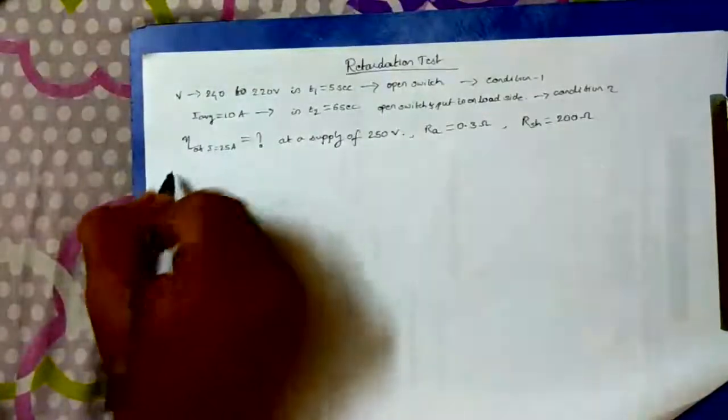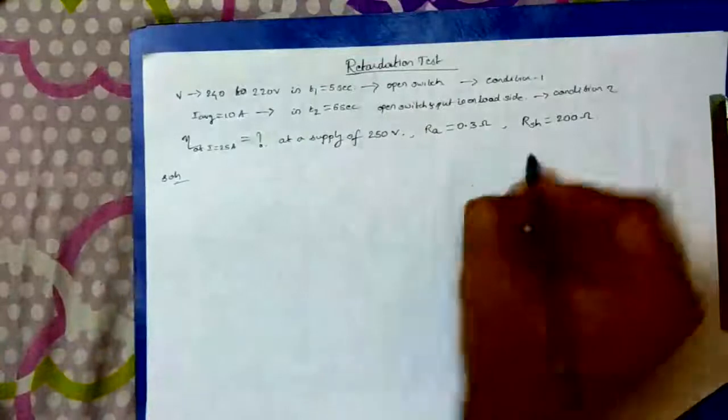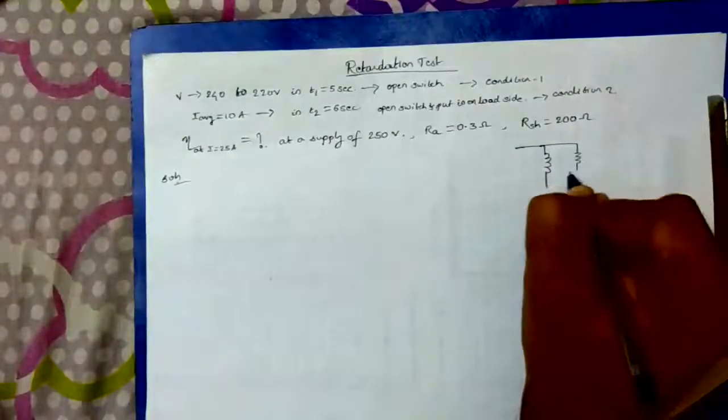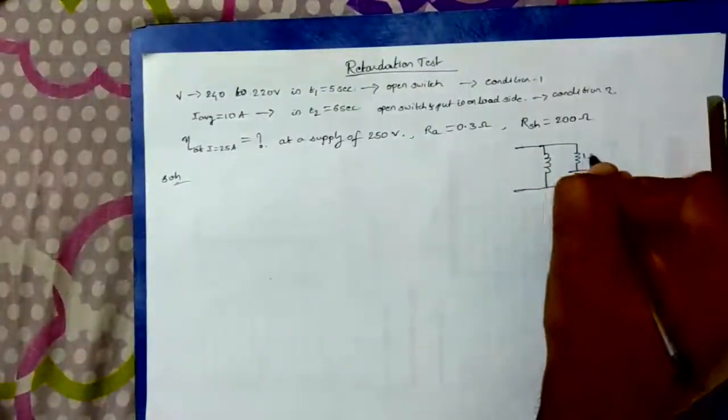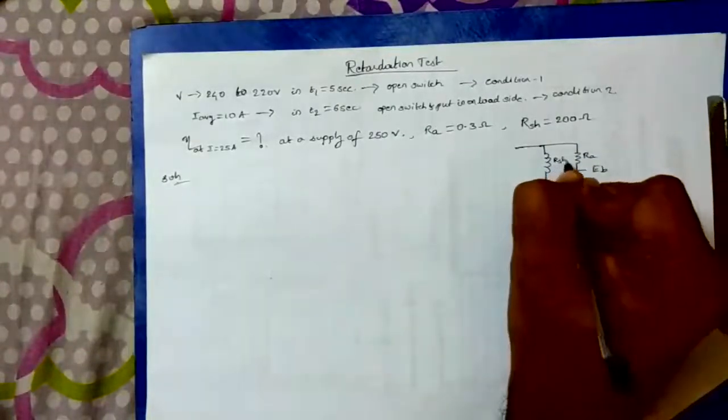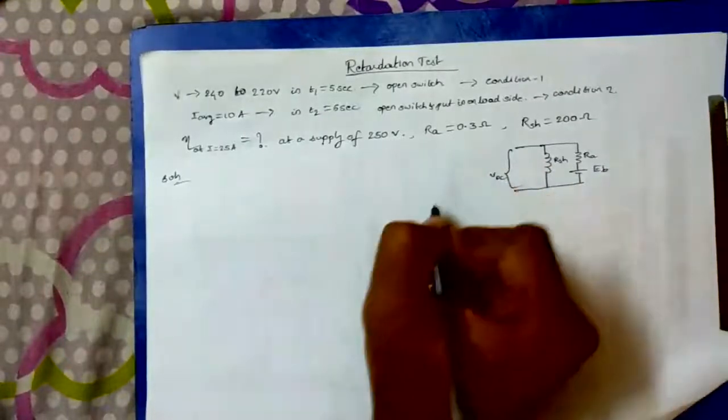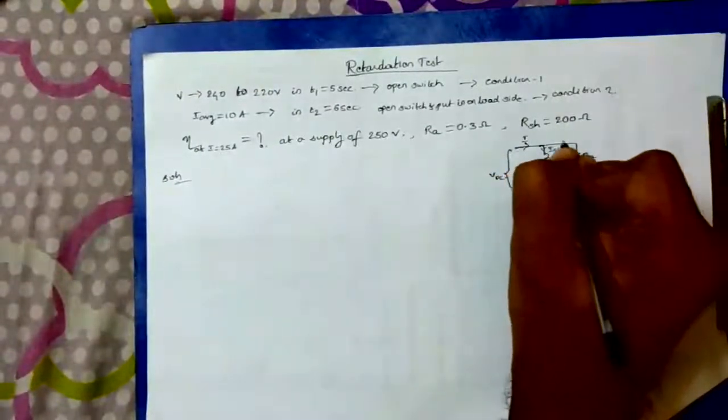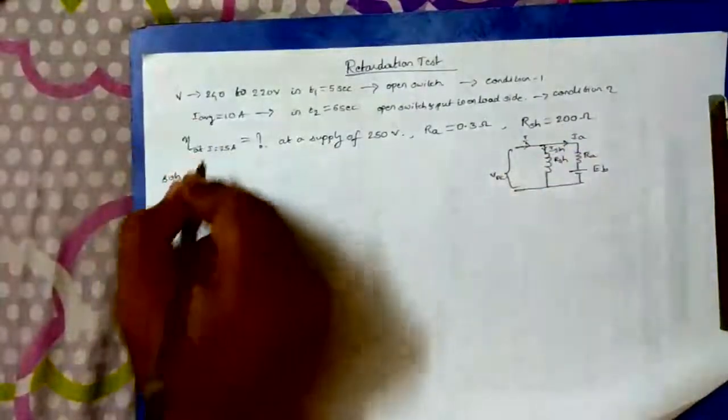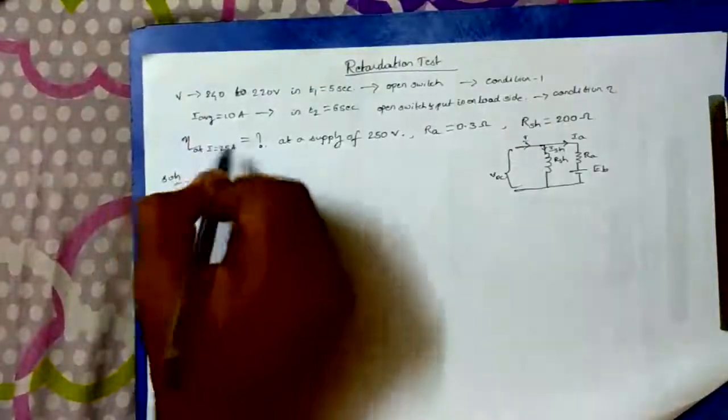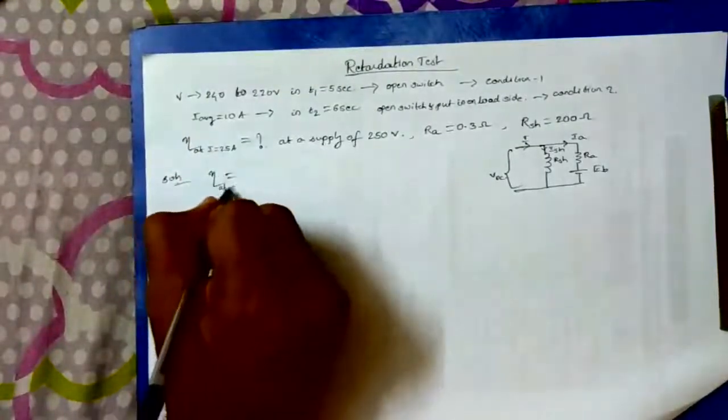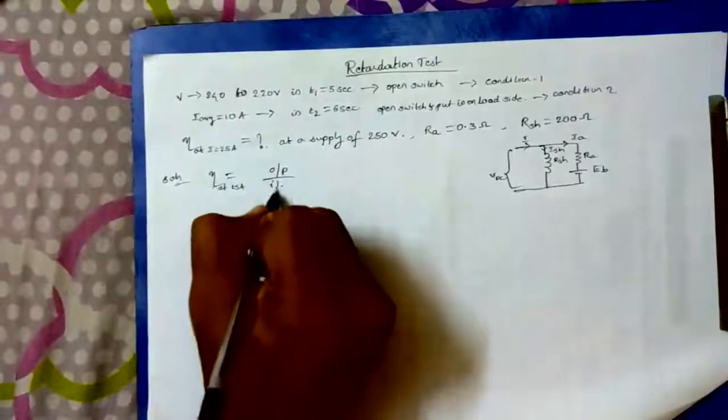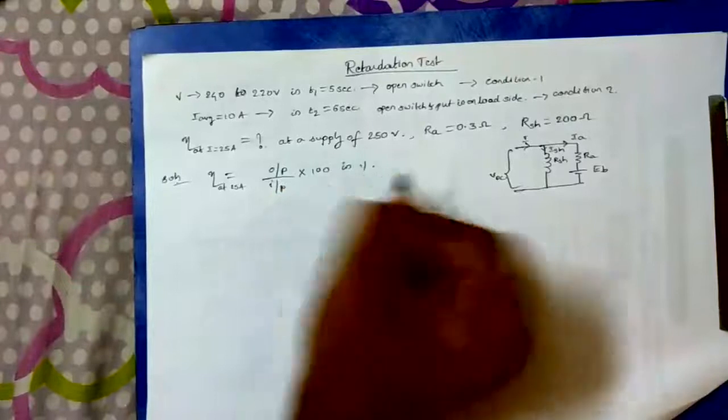Let us start with the problem. We are supposed to calculate efficiency. I shall write efficiency formula at 25 amps. Efficiency is equal to output by input into 100 in percentile.